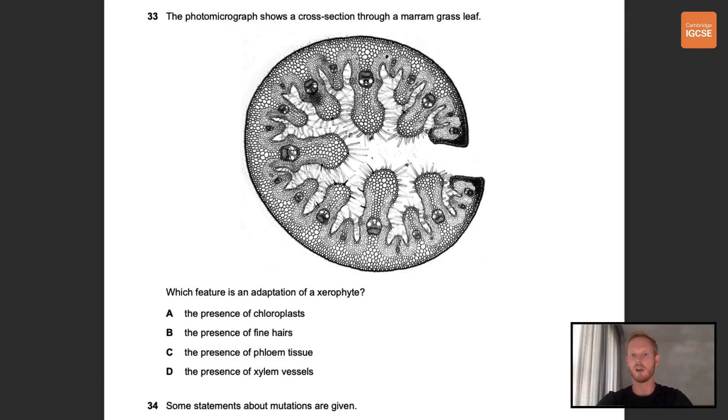Number 33. The photomicrograph shows a cross-section through a marram grass leaf. Which feature is an adaptation of a xerophyte? So xerophytes are plants that are adapted to survive in dry environments, so they have features that help to maximize water uptake and minimize water loss. Inside the marram grass there are many fine hairs which help to trap humid air reducing the rate at which water vapor is lost from the leaf.